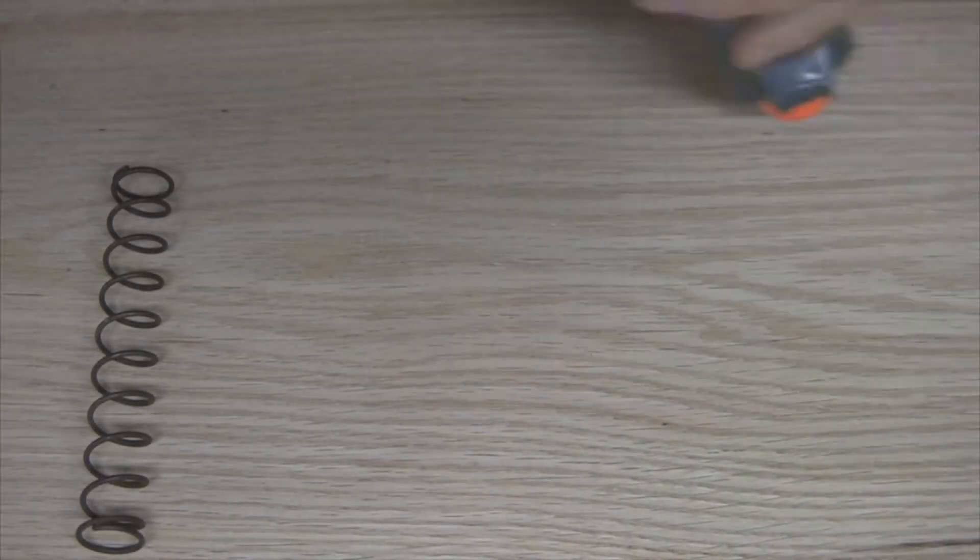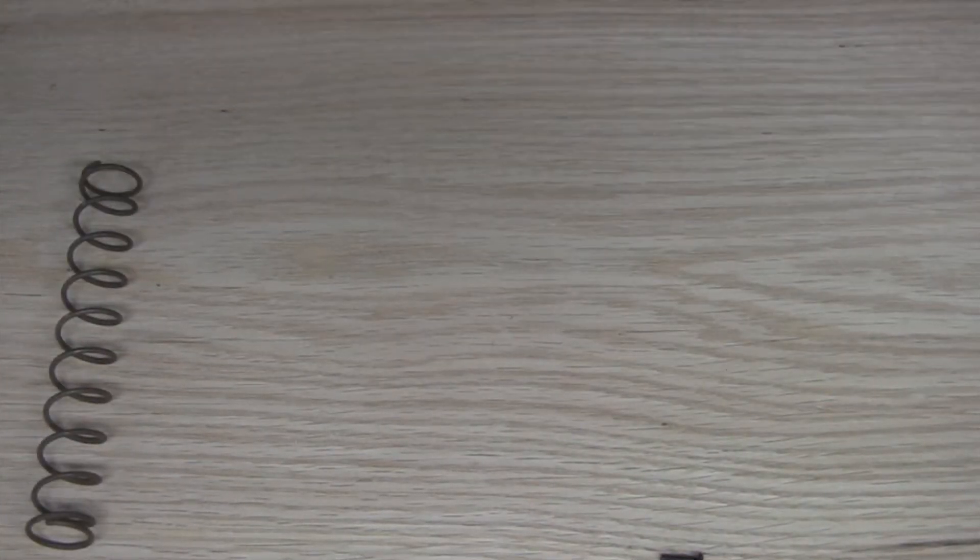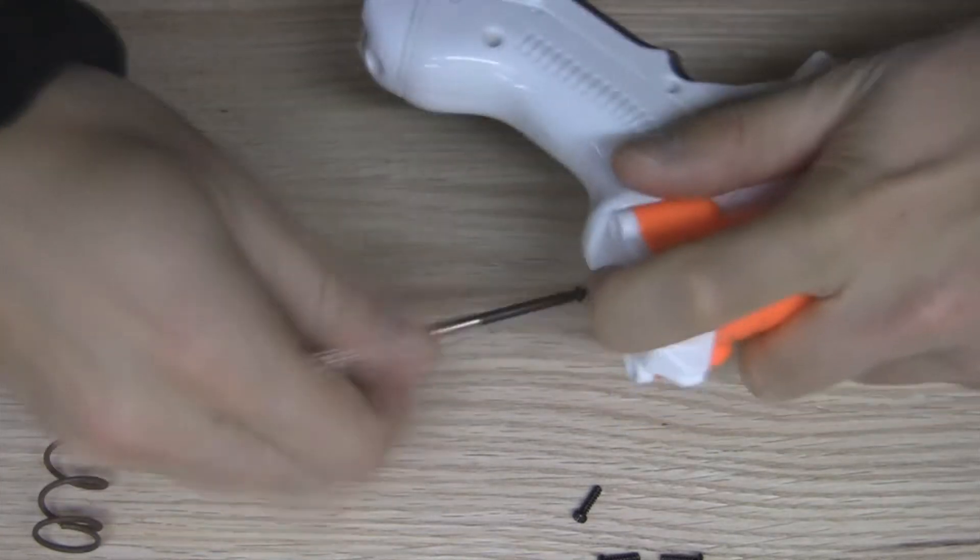We begin by taking apart the gun through the four screws on the back of the gun. The four screws hold a plate that holds the spring in place. By popping off the plate, the spring comes out with it.